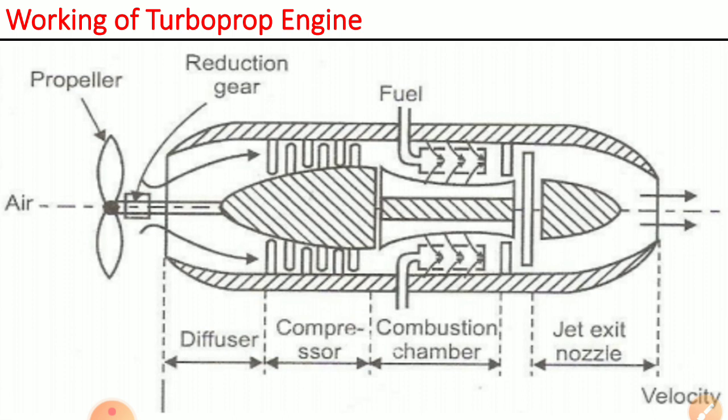That partially pressurized air then passes through the compressor, where its pressure increases to the required level. Then it passes through the combustion chamber, where fuel is injected in the presence of that air and combustion takes place. Because of that combustion, hot exhaust gases are generated.